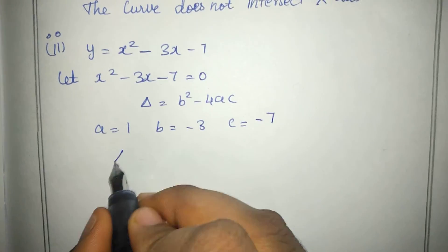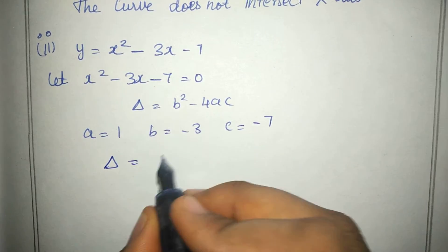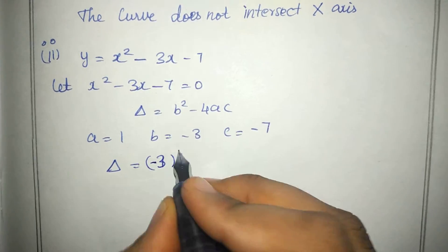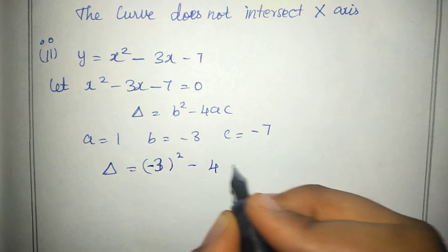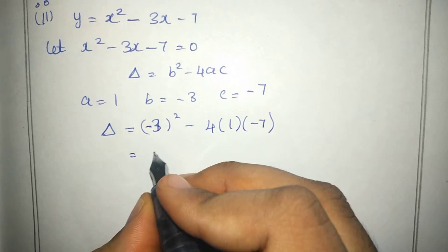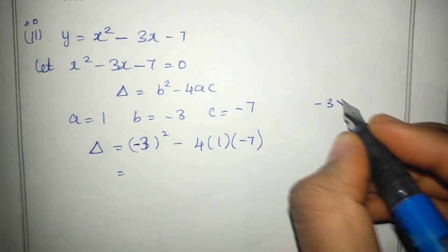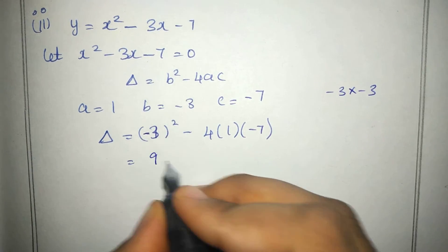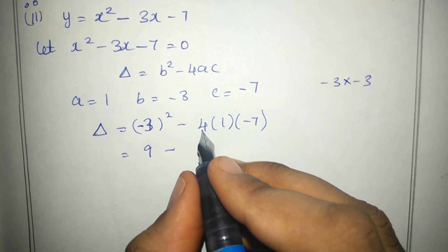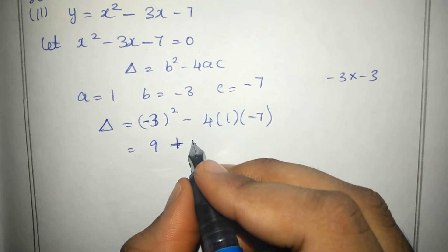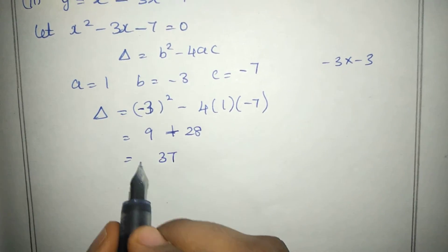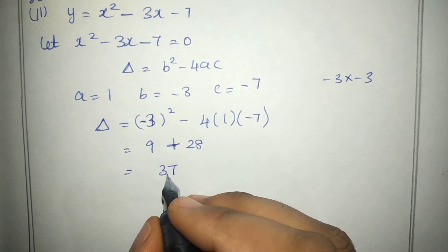We substitute into the formula. Discriminant is equal to: minus 3 squared minus 4 into 1 into minus 7. So 3 squared is 9. Minus into minus gives plus, so 9 plus 28 equals 37. Discriminant is equal to 37.